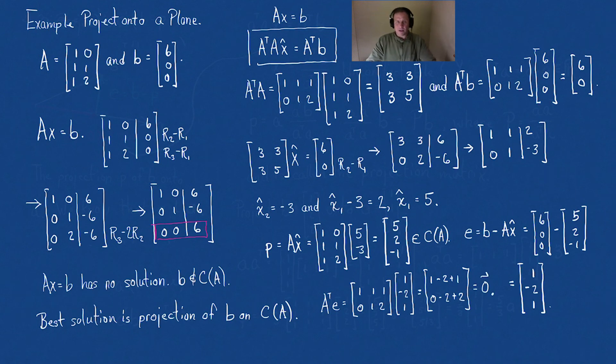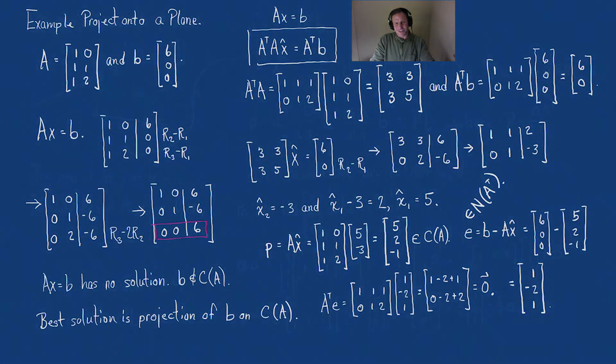And that is how we calculate the projection of b onto a column space. It's because there's usually no solution. And that e is in the null space of A transposed. I hope that helps. Thanks so much.